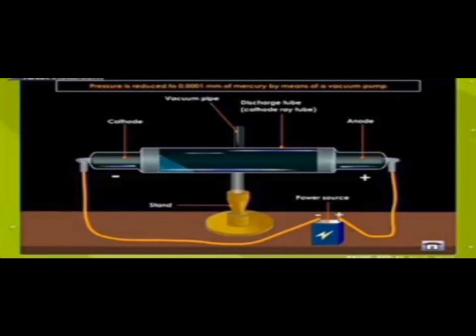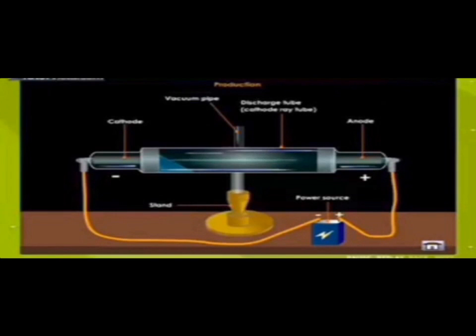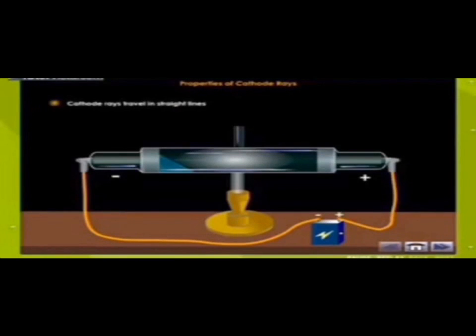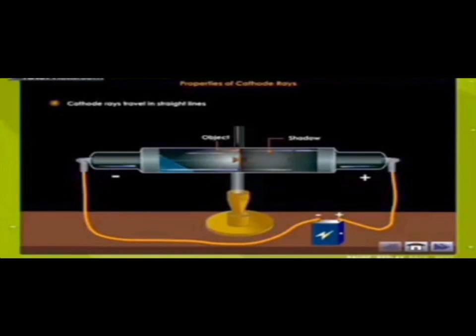The pressure is reduced to 0.0001 mm of mercury by means of a vacuum pump. A glow is seen on the walls of the glass tube. The bright fluorescence glow is due to the striking of rays emitted by the cathode, and these rays are called cathode rays. Now let us see the properties of cathode rays. Cathode rays travel in a straight line. When an opaque object is placed in the path of the cathode rays, a shadow is caused on the glass pole opposite to the cathode, showing that cathode rays travel in a straight line.